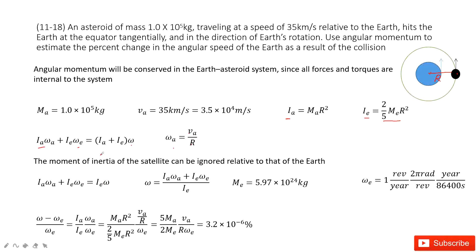We can find that the moment of inertia for the planet can be ignored relative to the Earth, because the planet is super small and the Earth is huge. So the moment of inertia Ia can be ignored, and the equation simplifies. We then get the function for the final angular velocity. Inputting the known quantities — including the mass of the Earth and the initial angular velocity of the Earth — we get the final answer, and we can see it is super small and can be ignored.